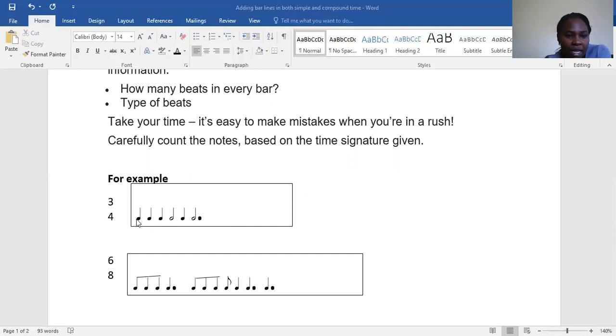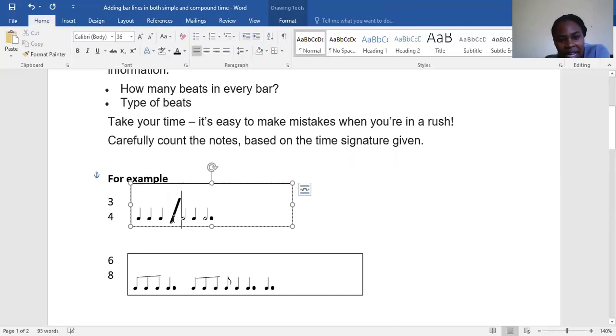This one is one, two, three, so my bar line is going to come here. I put my bar line. Then a minim has two crotchets plus this one here, it is three, so my next bar line is going to be there.